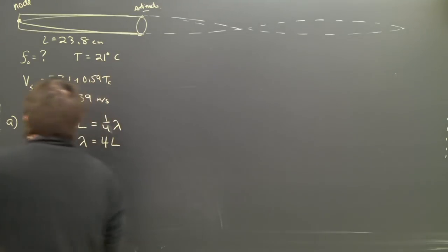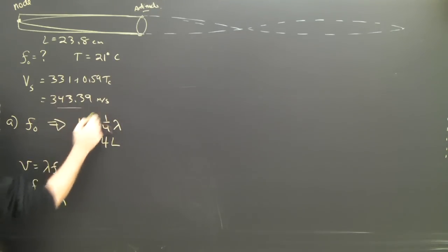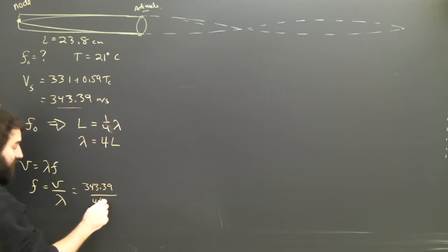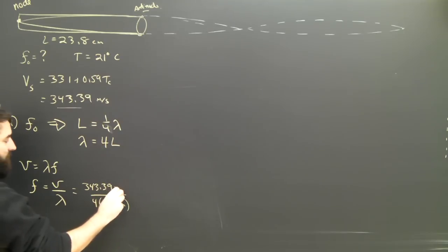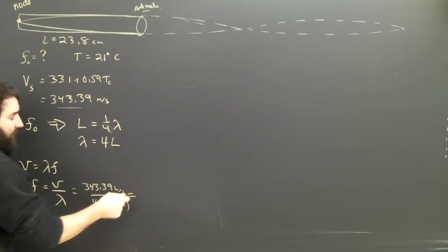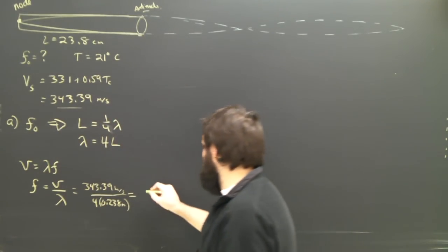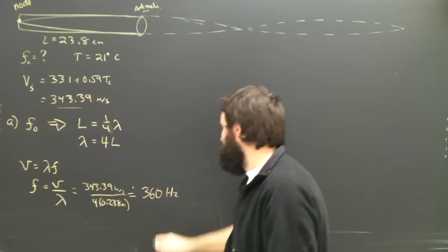So that's okay. We go to our universal wave equation, V equals lambda F, to find that F equals V over lambda. We've already worked out V. We now know lambda. So 343.39 divided by four times 23.8. But that's centimeters. I've got to make it 0.238 meters. And when I grab my calculator, I get 359 point whatever, 316 hertz. This is what I'm going to get.